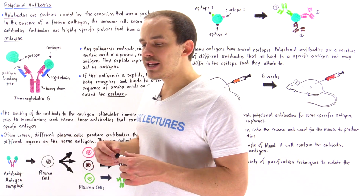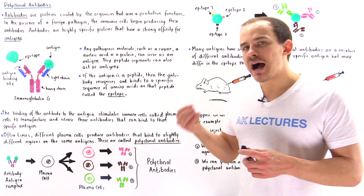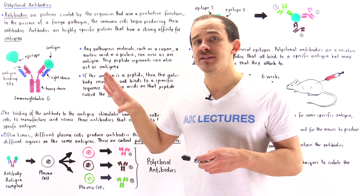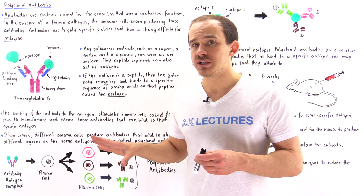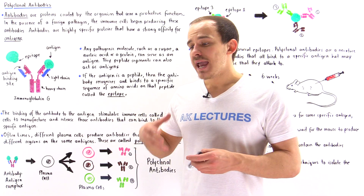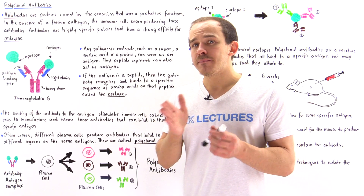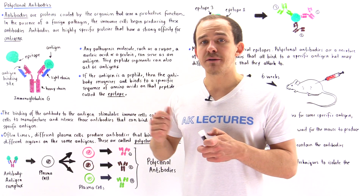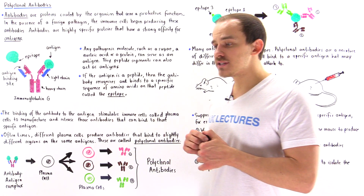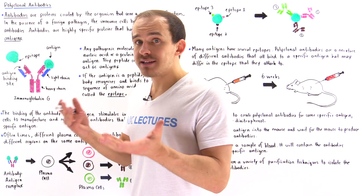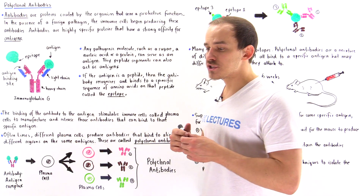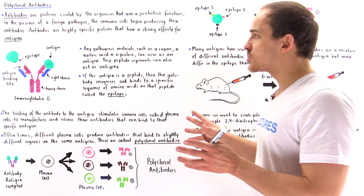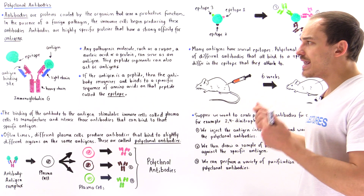What an antibody is, is basically a very highly specialized type of protein that has a high affinity for a specific type of pathogenic antigen. Now what exactly is an antigen? An antigen is any type of molecule that comes from that infectious agent that invaded the body. So an antigen could be, for example, a sugar molecule, a polysaccharide that came from that infectious agent. It can also be a nucleic acid or it can be a protein. In this lecture we are going to assume our antigen is a protein.